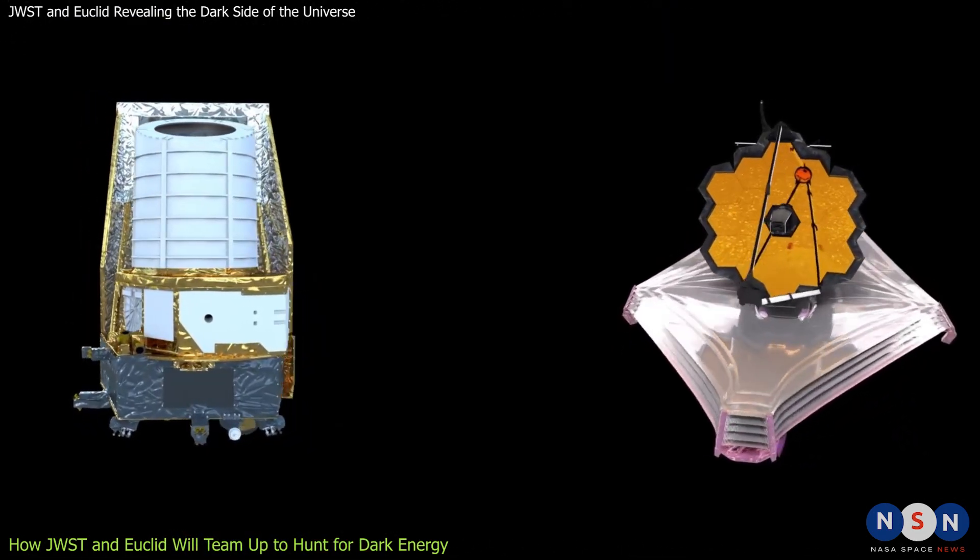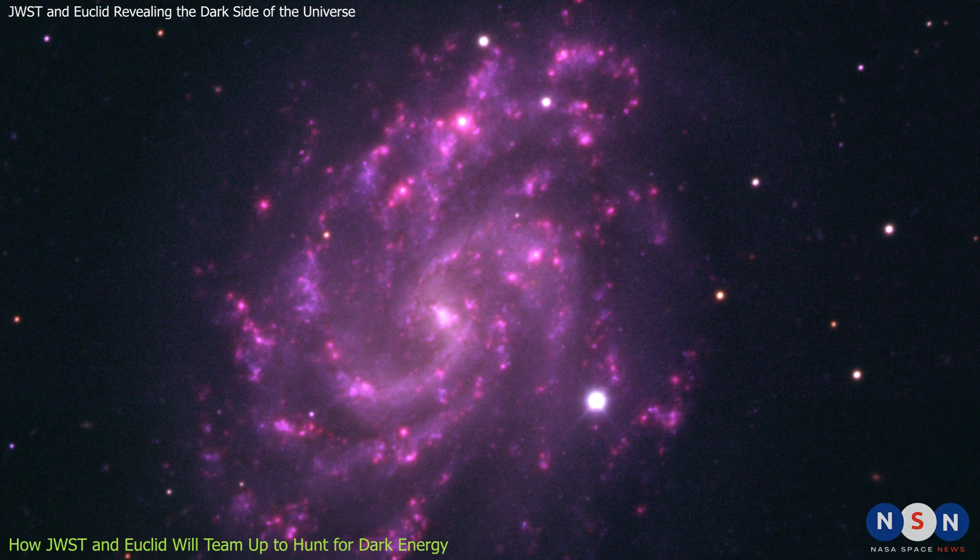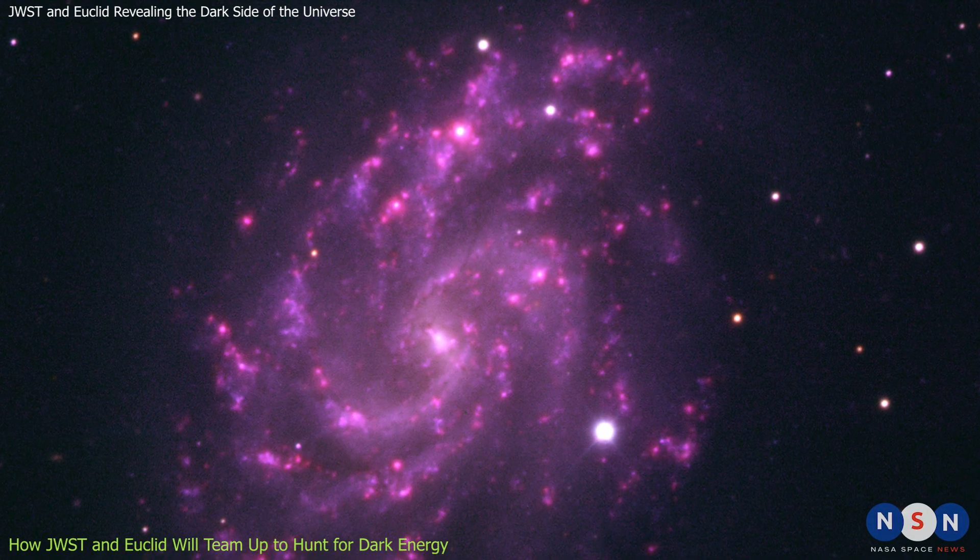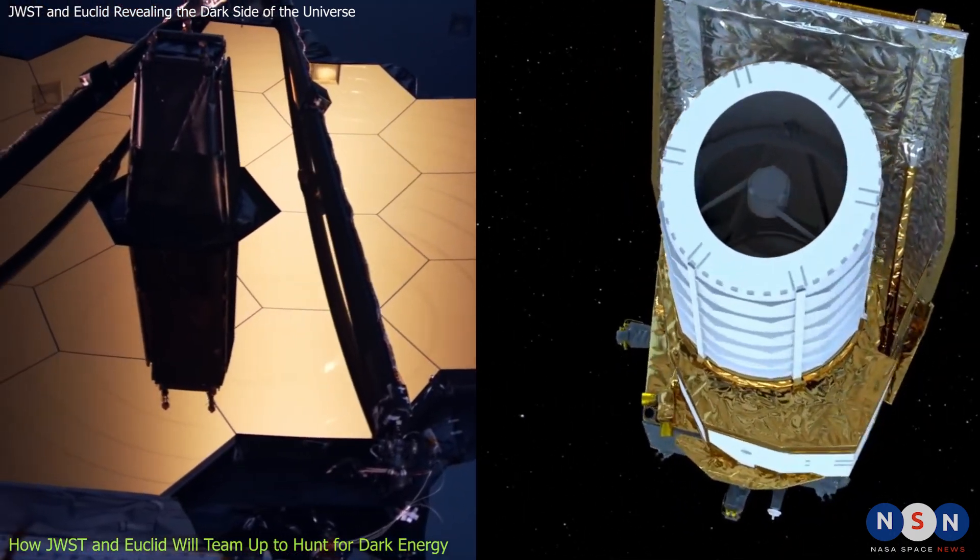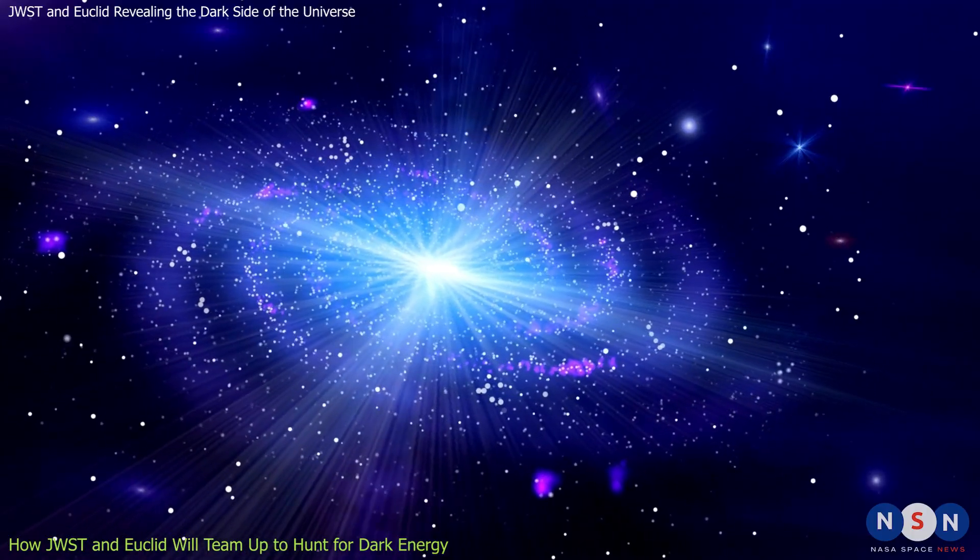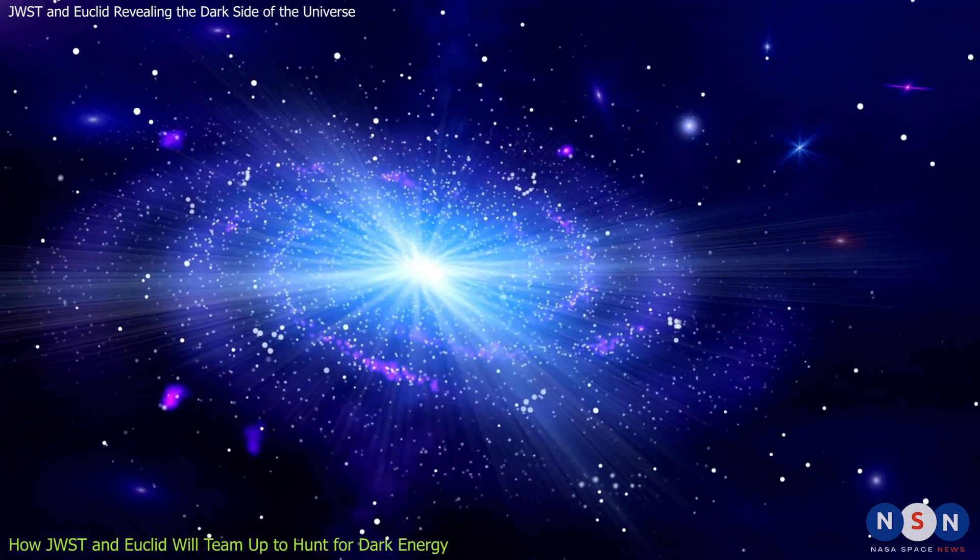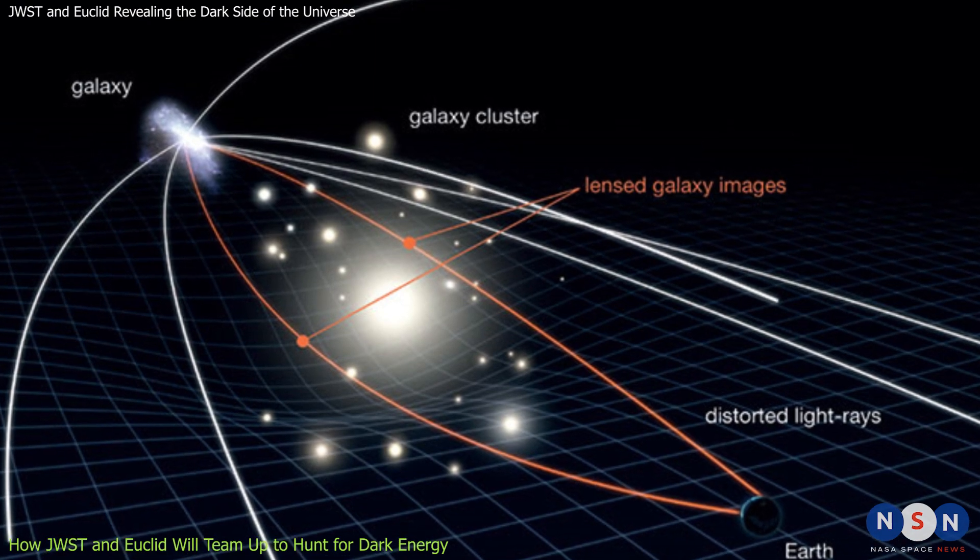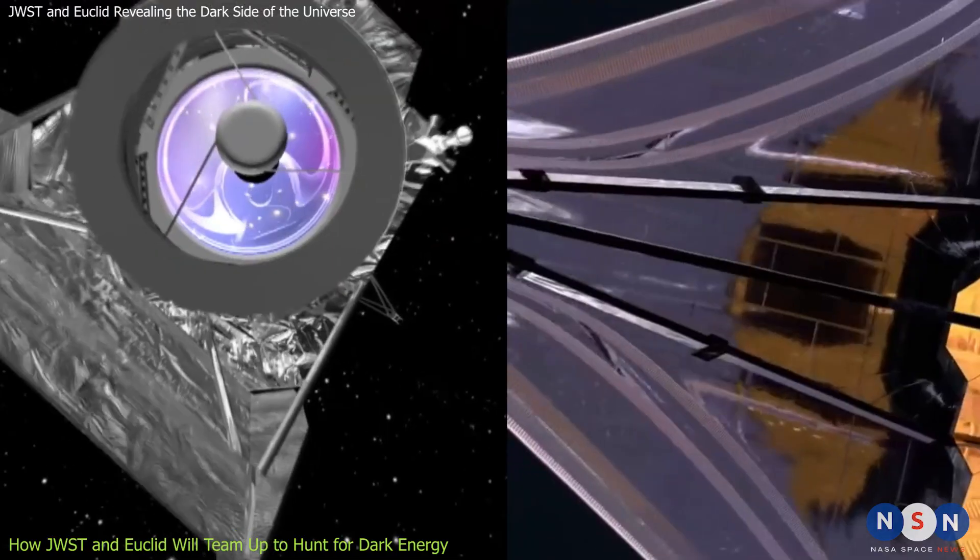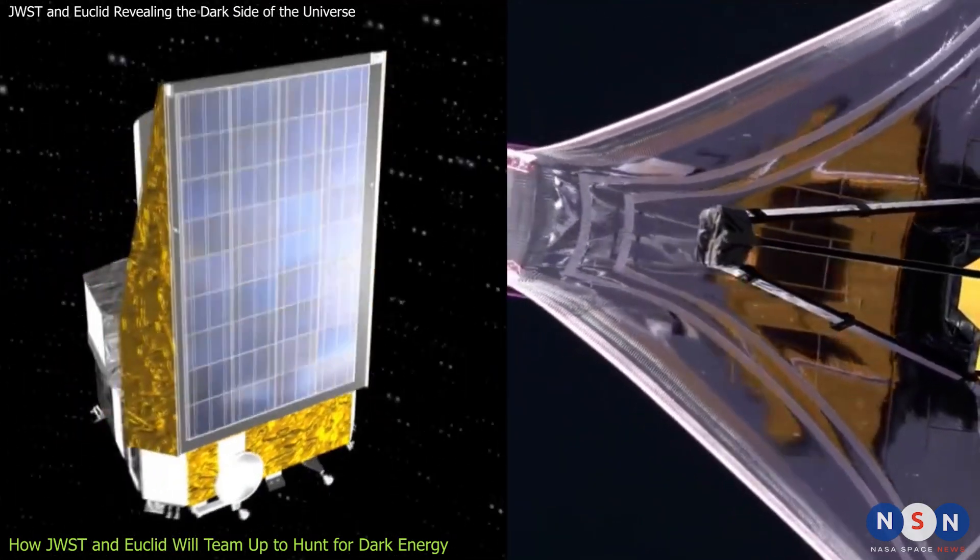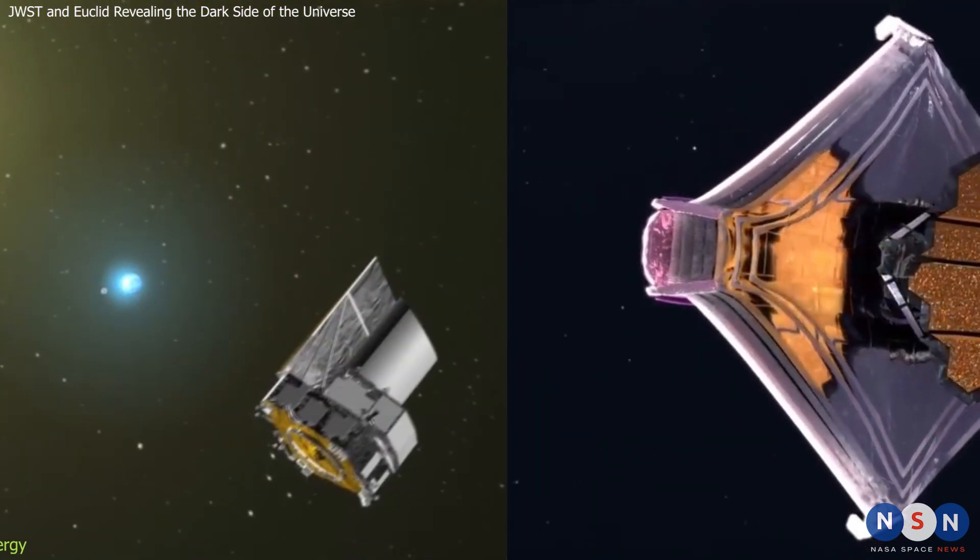By combining their data and images, JWST and Euclid will be able to improve their measurements of dark matter and dark energy, reduce their uncertainties and errors, and cross-check their results. They will also be able to study some interesting phenomena that require both infrared and visible observations, such as gravitational lensing by galaxy clusters or supernovae explosions. Together, JWST and Euclid will form a powerful team that will help us shed some light on the dark side of the universe.